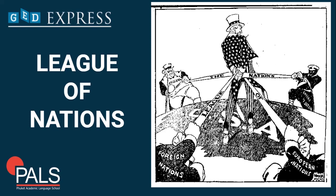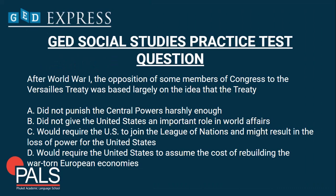The League of Nations was officially founded through the Treaty of Versailles and had 42 founding member countries. So this is an overview of the end of World War One, the treaties, and what happened after the war. Now let's go ahead and try to answer a GED Social Studies practice test question.